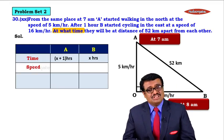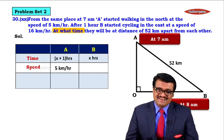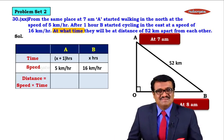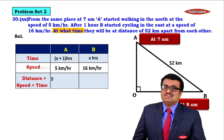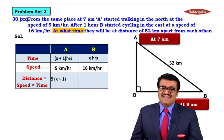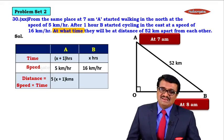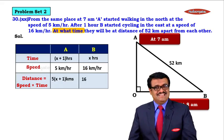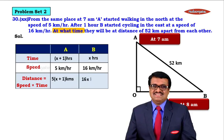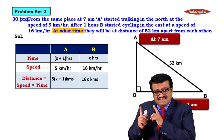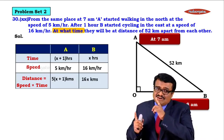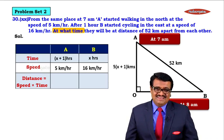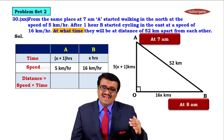Since we know speed and time, we can calculate distance using distance equals speed into time. So OA equals 5(X+1) km, OB equals 16X km, and AB equals 52 km. We now know all three sides of the triangle.